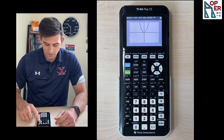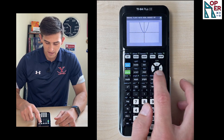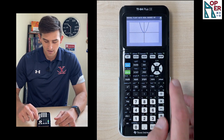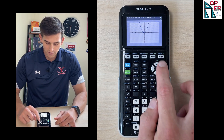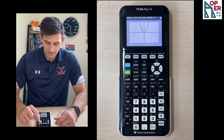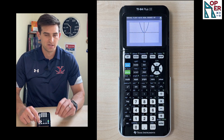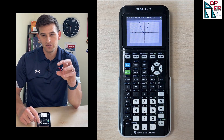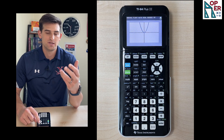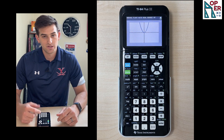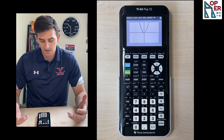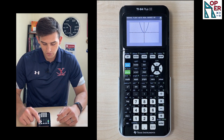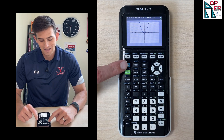If you'll notice right here where we have our directional keypad, the up arrow and the down arrow have in blue, like almost like the brightness sun figure or icon that you would see on a computer to adjust the brightness. Since it's in blue, we have to hit the second button.